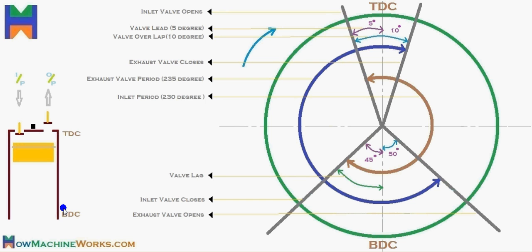The exhaust valve should open at bottom dead centre and remain open until it reaches the top dead centre, where it closes. That is another 180 degrees of crankshaft rotation. But practically, when an engine works, the valves don't operate like this.